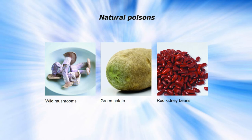Red kidney beans — the dried variety — contain a toxin which you need to deactivate by boiling for at least 15 minutes before use. If you're going to use dry beans, soak them overnight, then boil them for 15 minutes, and then simmer until they are tender.